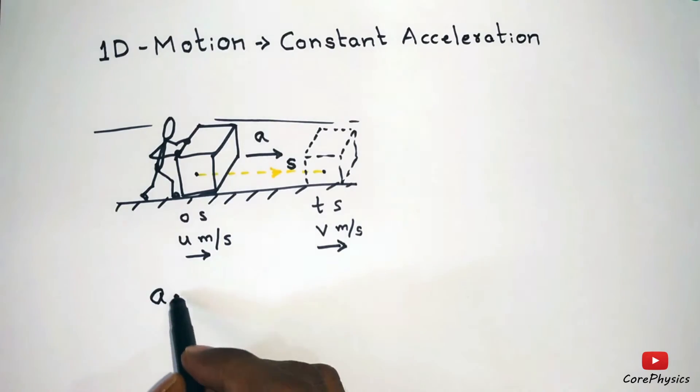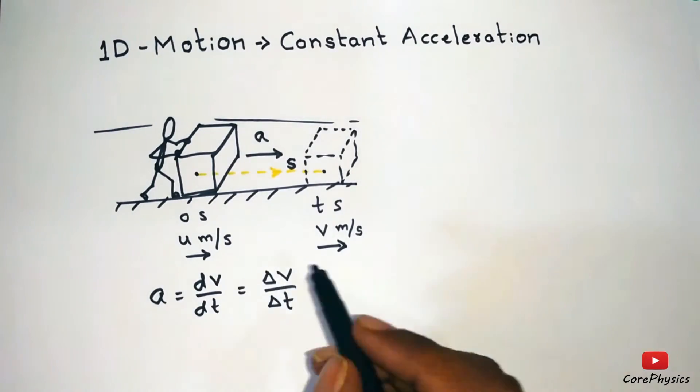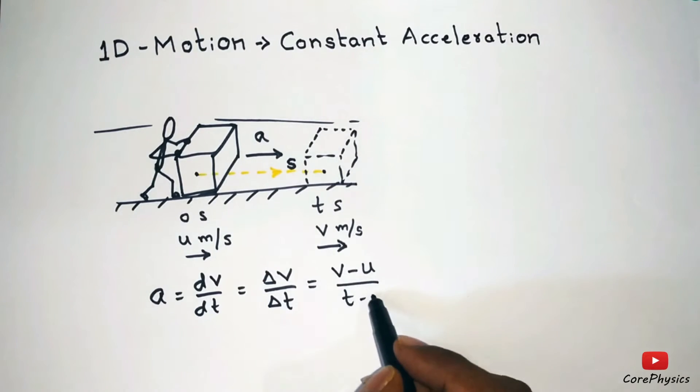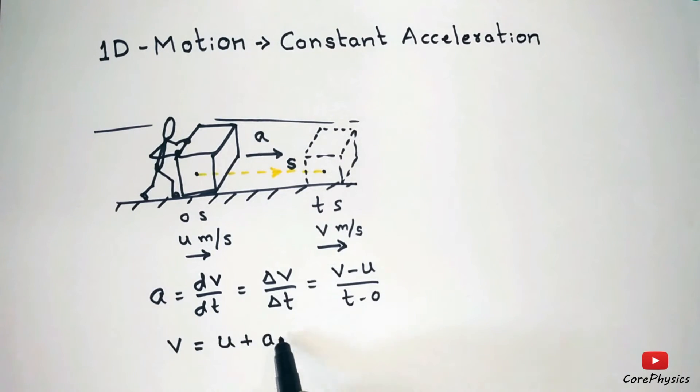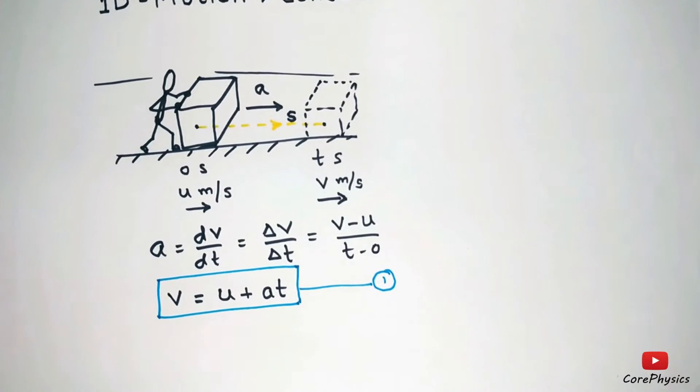So the acceleration a is equal to dv by dt or delta v by delta t which is final velocity minus initial velocity divided by time taken. On simplifying this equation we will get v equal to u plus at. So with this equation we can find final velocity with given initial velocity, acceleration and time.